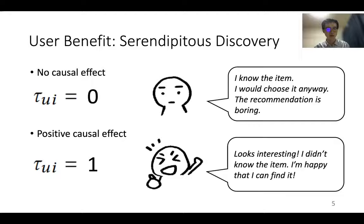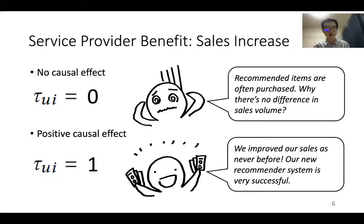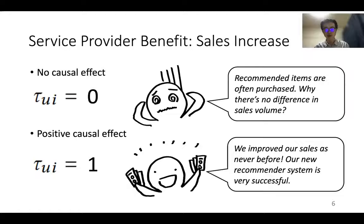On the other hand, if there's positive causal effect, a user might feel: looks interesting, I didn't know the item — I'm happy that I can find it. For service providers, it can lead to an increase in sales. When there's no causal effect, a service provider might get into trouble: recommended items are often purchased, yet why is there no difference in sales volume? But with positive causal effect: we improved ourselves as never before — our new recommender system is very successful.